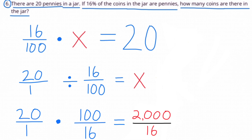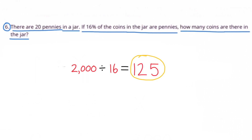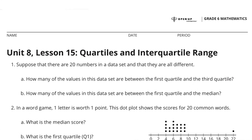Two thousand over sixteen is the same as two thousand divided by sixteen, which equals one hundred twenty-five. So x equals 125 — there are 125 coins in the jar. Twenty of those coins are pennies, and sixteen percent of the coins in the jar are pennies. Congratulations, you have completed Unit 8, Lesson 15: Quartiles and Interquartile Range.